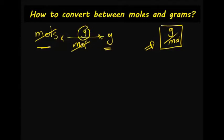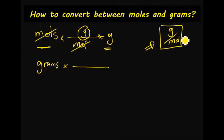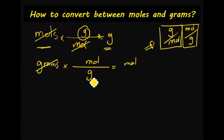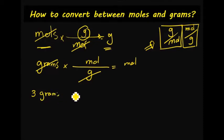What if I am given grams and I want to convert to moles? In this case I will flip my conversion factor, which will be moles over grams. Grams will cancel out and I will be left with moles. So let's work on some examples. If I have three grams of calcium carbonate...